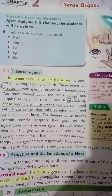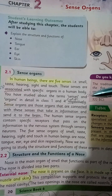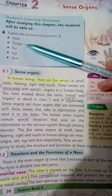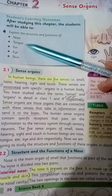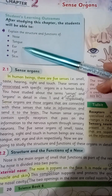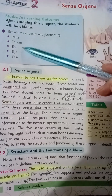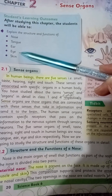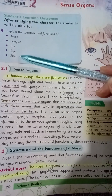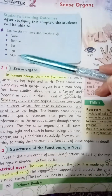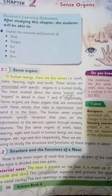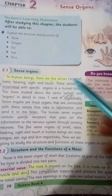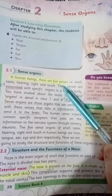First we have to know about the sense organs. We have five sense organs: the sense of smelling, which is related to the nose; the sense of taste, which is related to the tongue; the sense of hearing, which is related to the ear; the sense of sight, which is related to the eye; and the sense of touch, which is related to the skin.